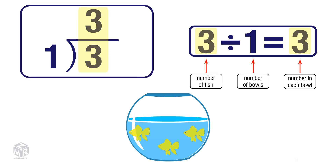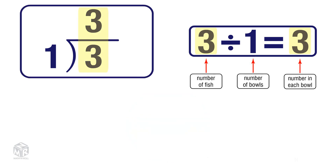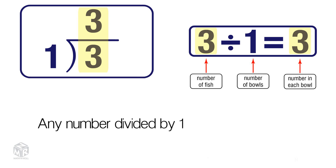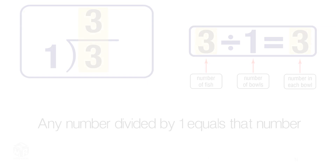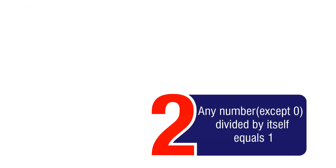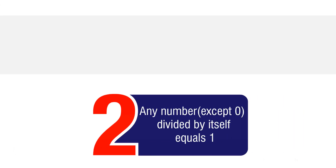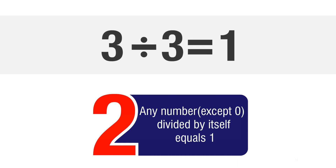Rule number 1: any number divided by 1 equals that number. Rule number 2: any number, except 0, divided by itself equals 1.